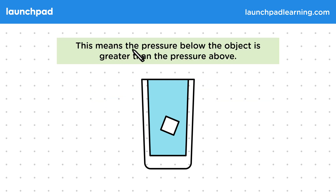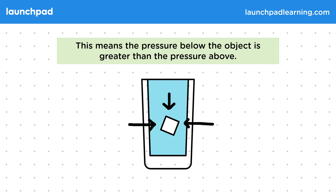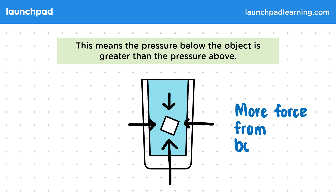Well, this means the pressure below the object is greater than the pressure above. Remember that pressure is a force spread out over a surface and that pressure changes with depth. This is because the weight from the water above increases with depth as the particles push against the object. Therefore the water exerts a greater pressure from below, and there is more force from the bottom as the water below the ice is deeper.